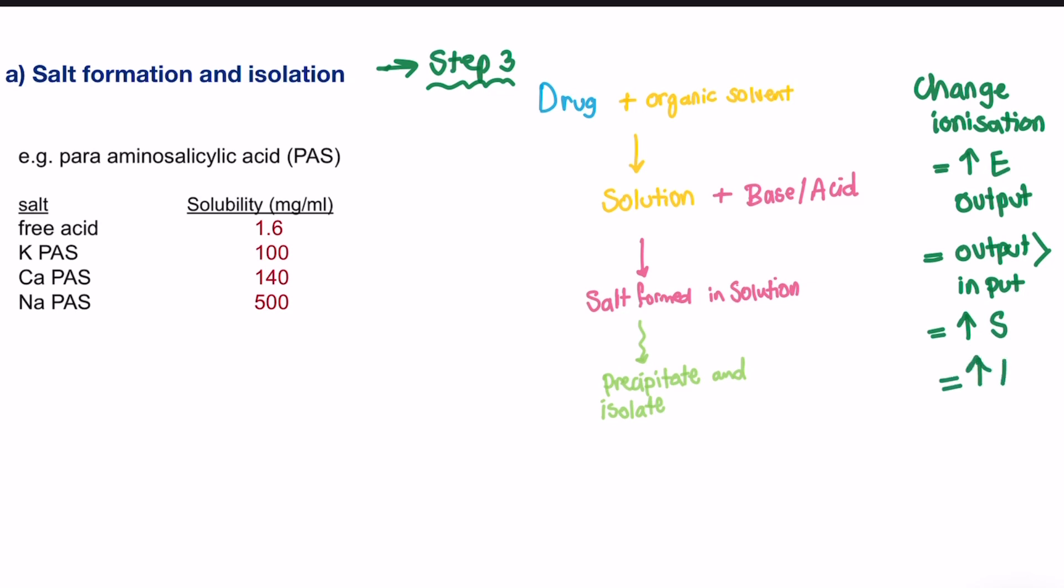Salt is formed when poorly water-soluble drug is dissolved with organic solvent to form a solution. Then, the solution is mixed with base or acid, depending on the drug nature. So if our drug is base, we add acid. Or if it was an acid, we add base. The acid and the base will form together a salt, which can be precipitated and isolated.